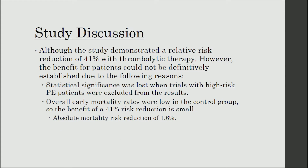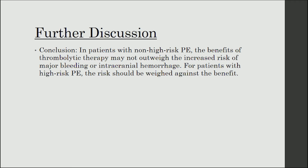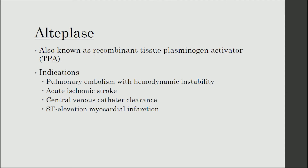To discuss these results, the study demonstrated a relative risk reduction of 41% with thrombolytic therapy. However, the benefit for patients could not be definitively established because statistical significance was lost when trials with high risk PE patients were excluded. Additionally, overall early mortality rates were low in the control group, so the absolute mortality risk reduction was only 1.6%. We can therefore conclude that for patients with non-high risk PE — submassive or low risk — the benefits of thrombolytic therapy may not outweigh the increased risk of major bleeding or intracranial hemorrhage. For patients with high risk PE, also known as massive PE, the risk should be weighed against the benefit.